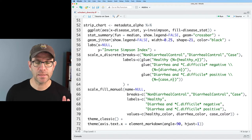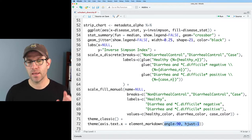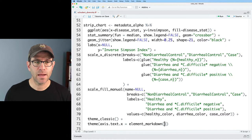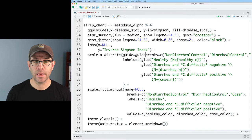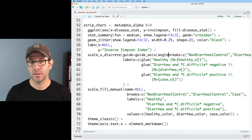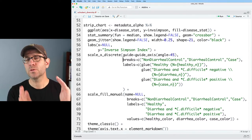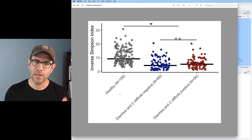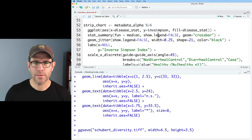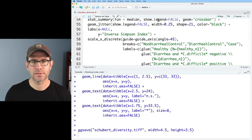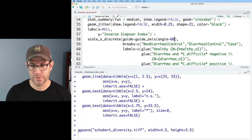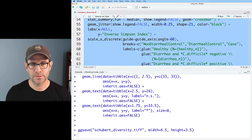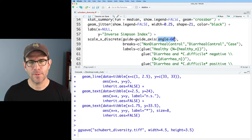So an alternative to setting the angle and the hjust in element_markdown or element_text is to come back up to scale_x_discrete and to do guide equals guide_axis, angle equals 45. And so this will set the angle for us as well as the justification. We now see that we've got that angle set for us, and of course, we could do any angle that we want here in this guide_axis.